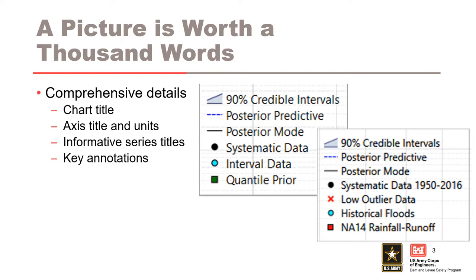Take these two legends, for example. The legend on the left displays the default series titles, while the legend on the right has been edited for clarity. Notice the systematic data now has the period of record from 1950 to 2016 included. The interval data title was changed to read historical floods, and the quantile prior title was changed to indicate that NOAA Atlas 14 rainfall runoff modeling was used to develop the quantile priors.